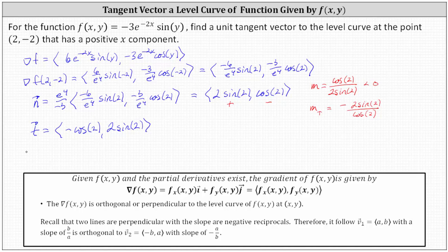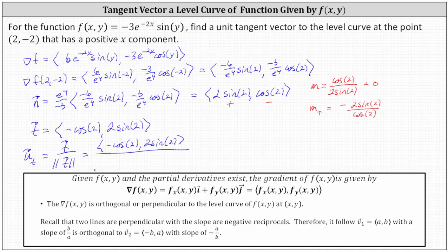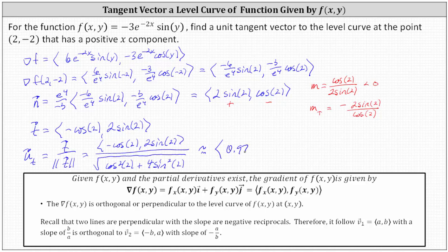Now we can determine the unit tangent vector u sub t, equal to vector t divided by the magnitude of vector t. The magnitude is the square root of negative cosine two squared, which is cosine squared two, plus two sine two squared, which is four sine squared two. From here we use a calculator to get a decimal approximation, where the x component is approximately 0.9748 and the y component is approximately 0.2231.